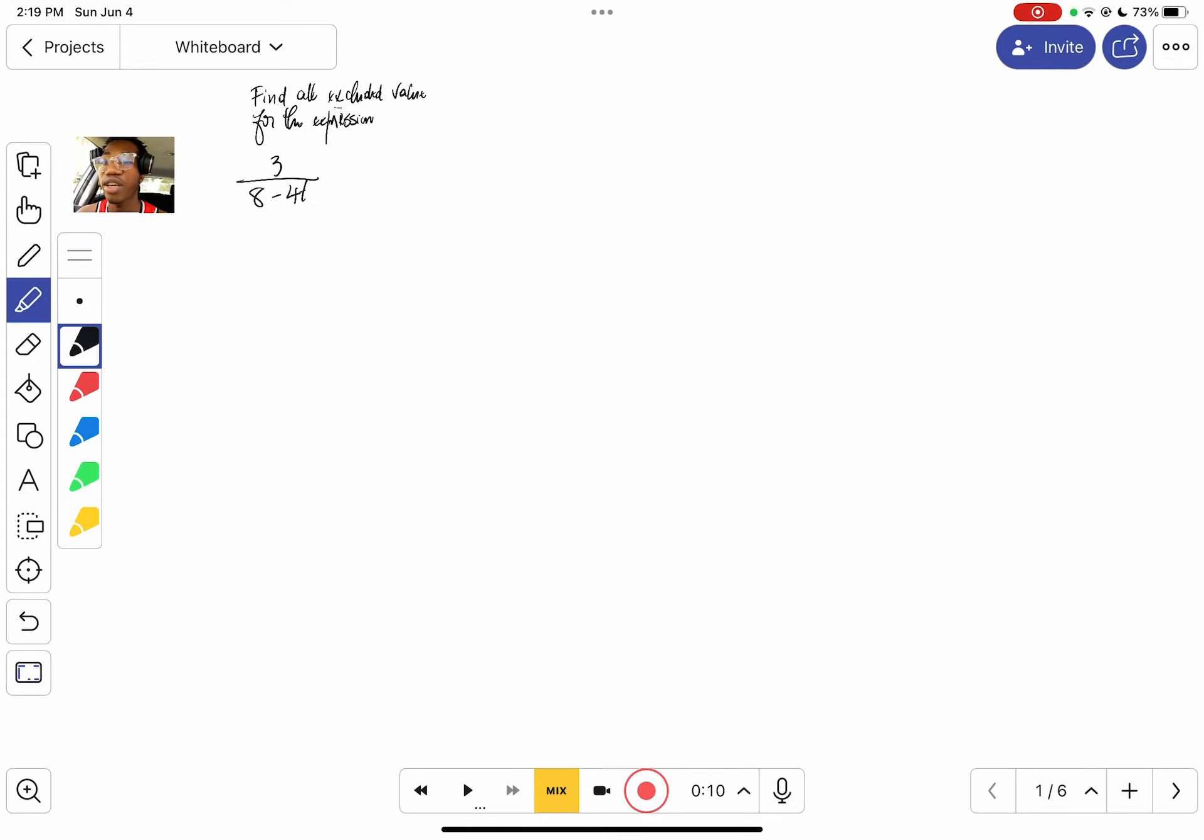Right now we have a different problem. They gave us an expression which is 3 over 8 minus 4t, and they ask us to find the excluded value.